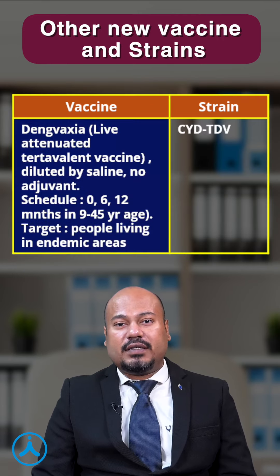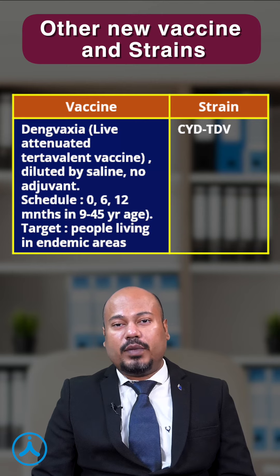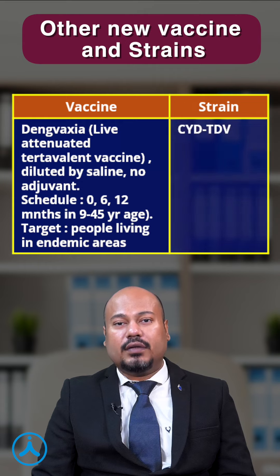Dengvaxia is the live attenuated tetravalent vaccine given at 0, 6, and 12 months in the 9 to 45 year age group, and the strain is CYD-TDV.